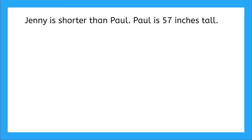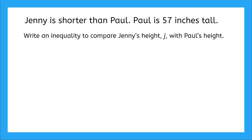Our next one says Jenny is shorter than Paul. Paul is 57 inches. Write an inequality that compares Jenny's and Paul's height, using the variable J to describe Jenny's height. I'm going to start by writing down the variable J. Jenny is shorter than Paul, so J is going to be less than Paul's height. We know Paul is 57 inches, so we can say J is less than 57, which is Paul's height. We've written an inequality comparing J and Paul's height of 57 inches.